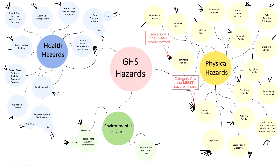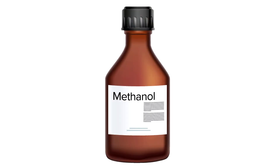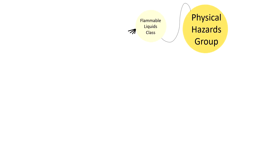When you are evaluating chemicals for use in your classroom, minimize chemicals in low categories. The next part of the video will illustrate the GHS, including labeling information for methanol's physical hazard of flammability. When we look at a safety data sheet or PubChem for information about methanol, we see that this common solvent is considered a flammable liquid, which is one of the 17 classes in the physical hazards group.